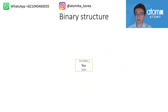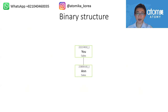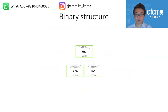In real life, the structure looks like this. When you register your first partner — let's say Ann — she appears right underneath you, but she's actually on your left side. When you register another partner, let's say Joe, the structure changes. We'll speak more about structure building strategy in another video, but that's it for now.